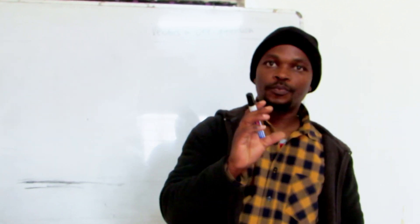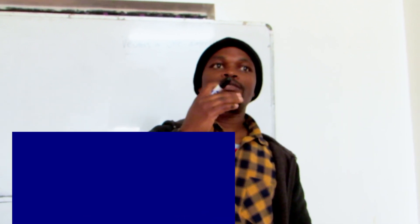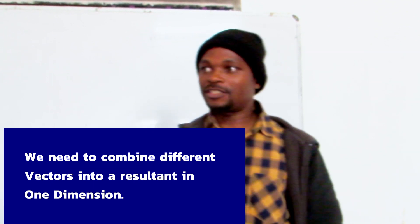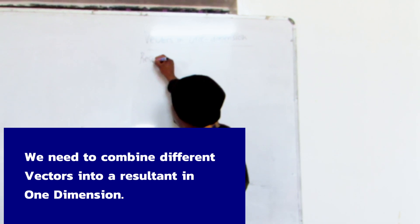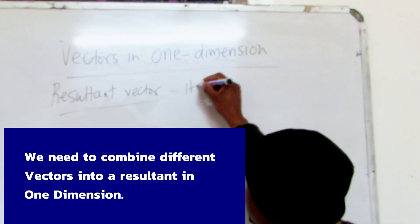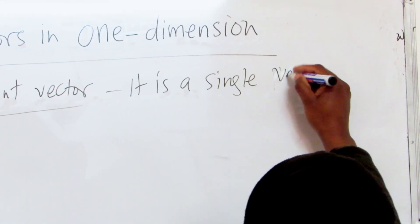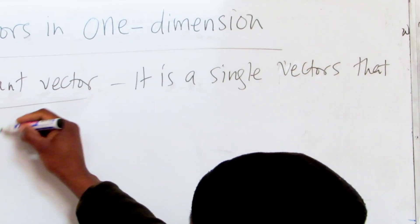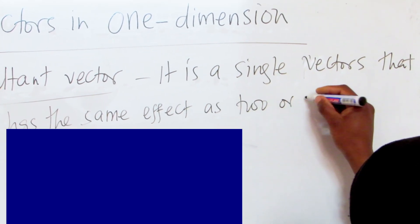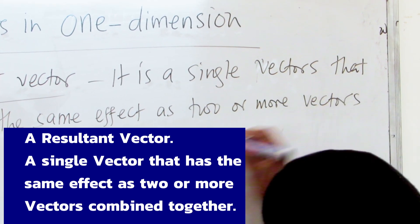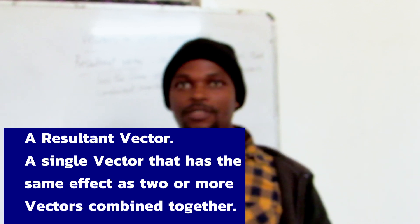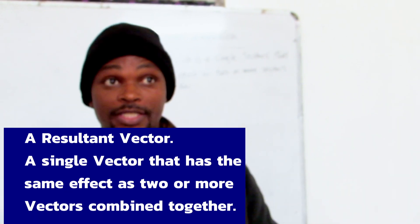At the end of the day, we need to combine different individual vectors into what we call a resultant vector in one dimension. A resultant vector is a single vector that has the same effect as two or more vectors combined together. We call that the resultant.